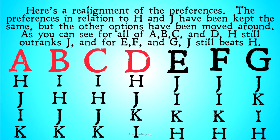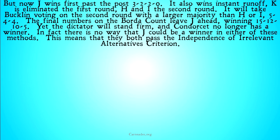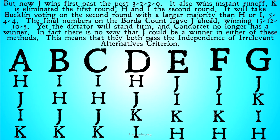Here is the realignment of the preferences. The preferences in relation to H and J have been kept the same. A, B, C, and D still prefer H to J, and E, F, and G still prefer J to H. But the other options have been moved around. As you can see, for all of A, B, C, and D H still outranks J, and for all of E, F, and G J still beats H. But let's take a look at what each of these voting procedures selects.